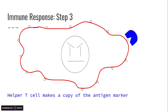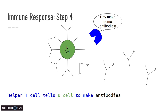In the third step of this response, we have something called a helper T cell. The helper T cell will touch the antigen and make a copy of the antigen marker — it comes along, touches it and goes, okay, this is what it looks like. It then goes over and finds a B cell, or antibody cell, or lymphocyte. So in step four, we're drawing a B cell talking to the T cell, and they're trying to make antibodies to help fight this infection.